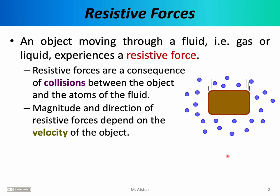That influence — the sum of all of those forces — is referred to as the resistive force acting on the box. The magnitude and direction of resistive forces depend on the velocity of the object. So if the object is falling downwards, if the velocity is in that direction, then the resistive force will be in the opposite direction.